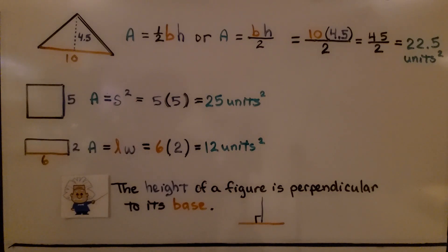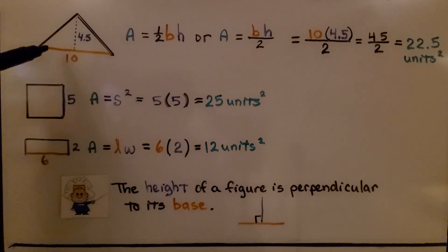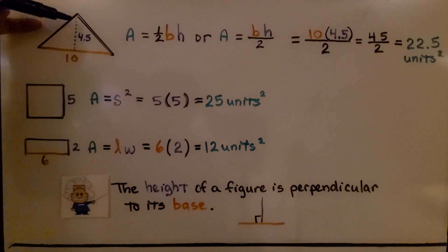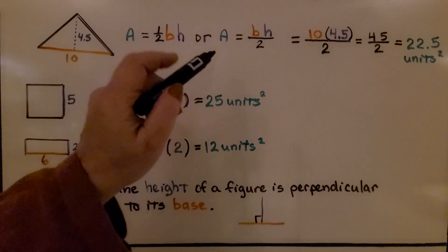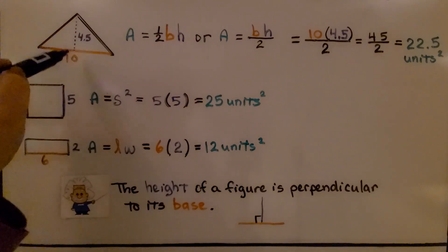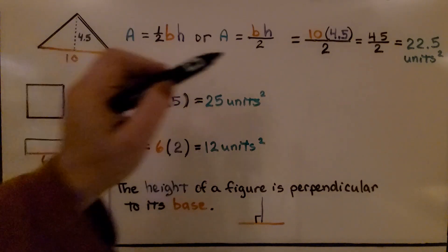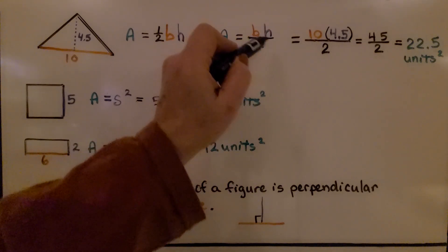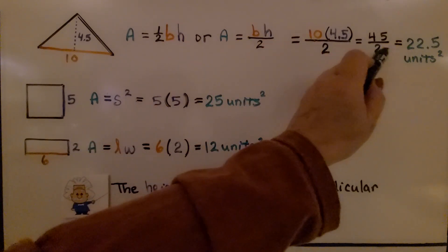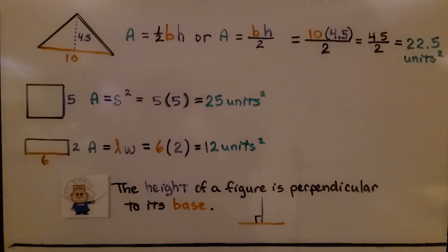We're going to quickly go through these formulas before we do some composite areas. Here we have a triangle. The base is 10 units and the height is 4.5 units. We do the base times the height — 10 times 4.5 — and divide by 2. We get 45 divided by 2, or 22.5 units squared.